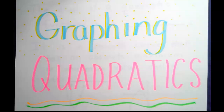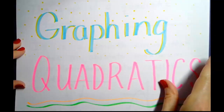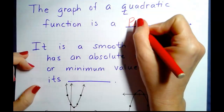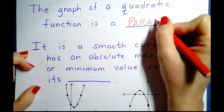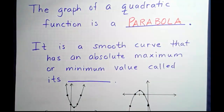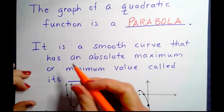Algebra graphing quadratics — we are all about graphing the functions that make parabolas. The graph of a quadratic function is a parabola, a smooth curve that has an absolute maximum or minimum value called its vertex.